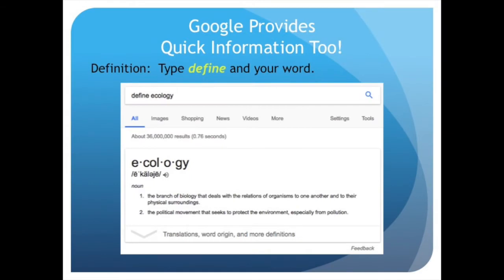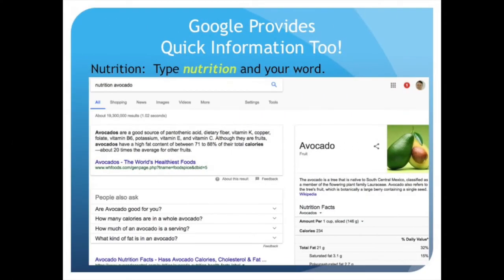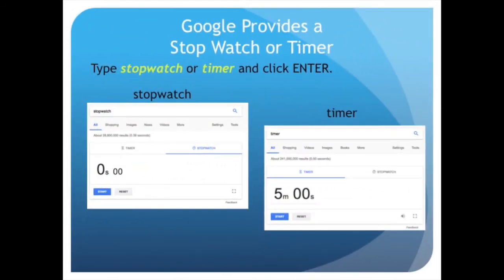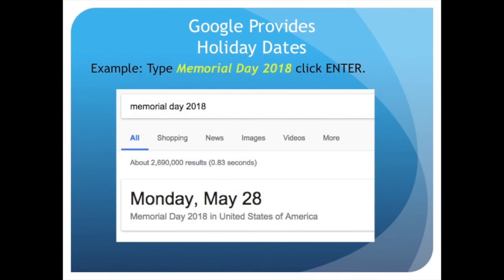Google provides quick information too. Type 'define' and your word for a definition. Type 'etymology' and your word for word origins. Type 'nutrition' and your food item for nutritional information. Type in a stock symbol to get stock quotes. Google also provides a stopwatch or timer — just type 'stopwatch' or 'timer' and press enter. You can also look up holiday dates by typing a holiday and clicking enter.